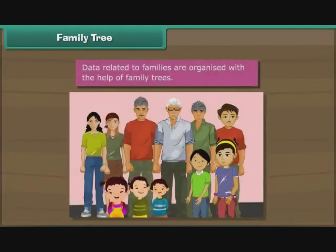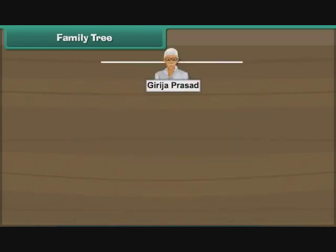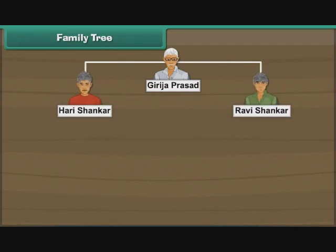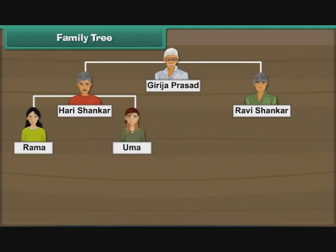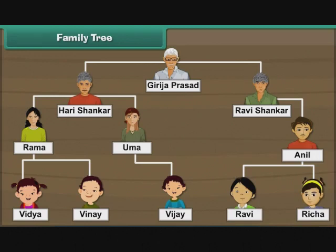Data related to families are organized with the help of family trees. Ravi lives in a joint family. Let us represent his family with the help of a family tree. The eldest member in the family is Ravi's great-grandfather, Girija Prasad. He has two sons, Hari Shankar and Ravi Shankar. Hari Shankar has two daughters, Rama and Uma. Ravi Shankar has one son, Anil. Rama has a daughter, Vidya, and a son, Vinay, while Uma has a son, Vijay. Anil has a son, Ravi, and a daughter, Richa. The family tree of Ravi's joint family is now complete.